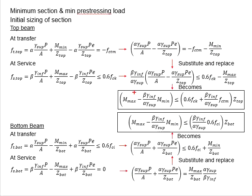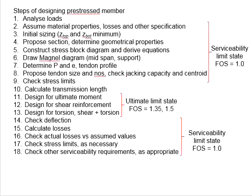The process basically involves the derivations of the equations for us to determine the minimum required z_top and z_bottom as the section modulus. Then we can provide any sections having the section modulus greater than the minimum requirement as determined from the initial sizing.